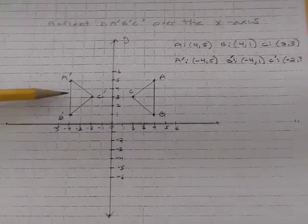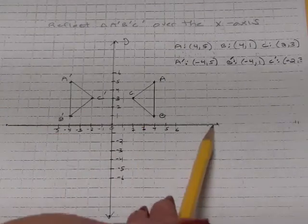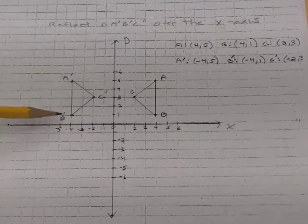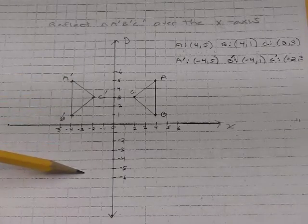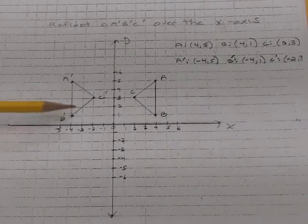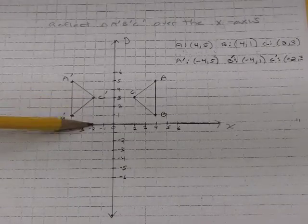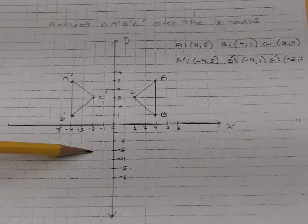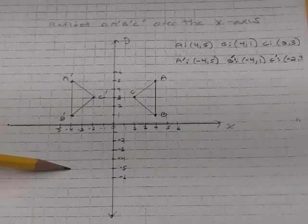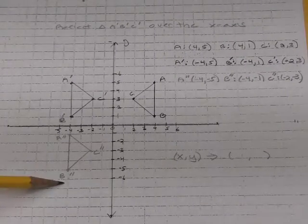Now we're going to reflect A prime, B prime, C prime over the X-axis. Just like before, when we do a reflection, the line of reflection is now the X-axis. Every point will be the same distance away from the X-axis on the opposite side as the original. So B prime is one unit away from the X-axis, and B double prime will be one unit away after the reflection. C double prime will still be three units away, but on the other side. A double prime will still be five units away, but on the other side of the X-axis.